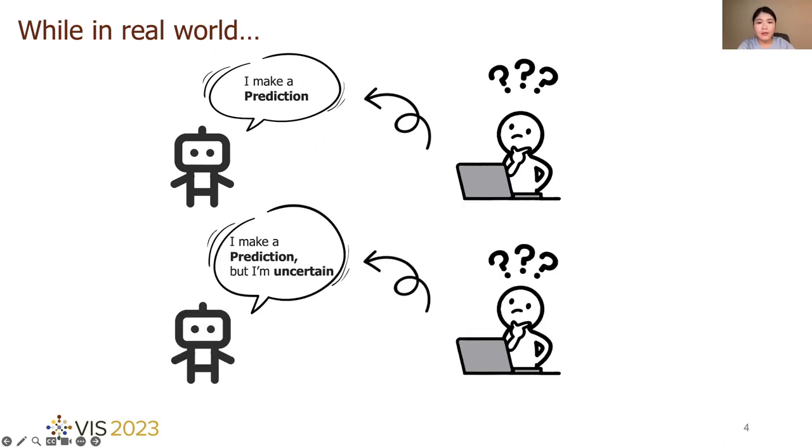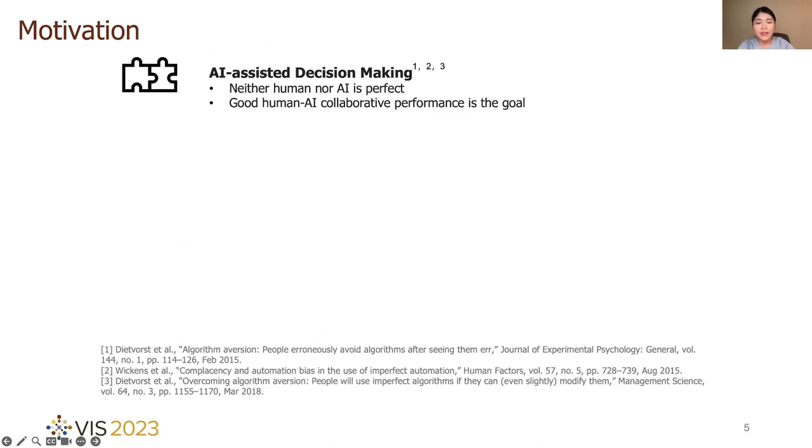It may be challenging for them to decide to adopt or reject a model prediction. Even model outcomes can have uncertainty. How would people decide if they are aware of the model uncertainty? Clearly, neither humans nor AI are perfect. Thus, human-AI collaboration in decision-making was expected to achieve complementary benefits as well as good collaborative performance.